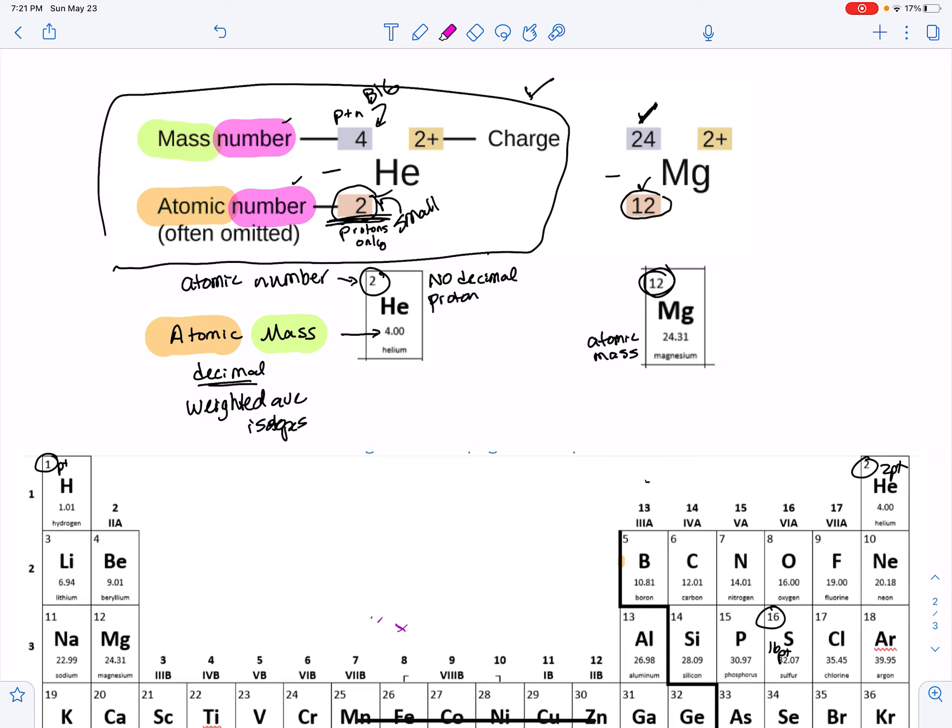So remember, the numbers without decimals, those are all the numbers of protons. The numbers that have decimals in them on the periodic chart do not ever go in this notation. This never has decimals. They have to do with the atomic mass. This number needs to be big, this number needs to be small.